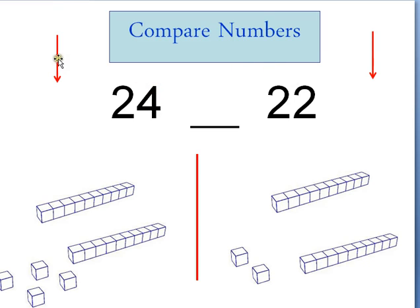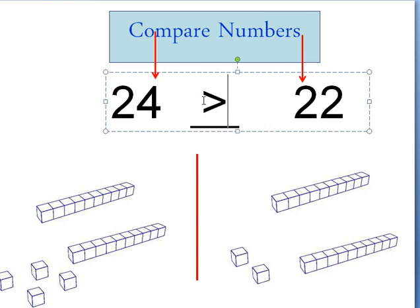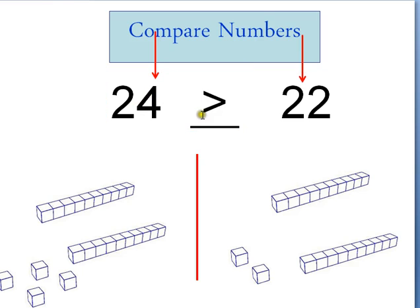Now let's look at numbers that have the same digit in the tens place. Both of these have ones and tens, and I'm still going to look at the tens place first — but I have the same number in both tens places: two groups of ten and two groups of ten. So now I have to look at the number in the ones place. This one has a four and this one has a two, so I know that 24 is a larger quantity. The symbol opens up to the bigger number — think of it as a hungry alligator eating the bigger number.